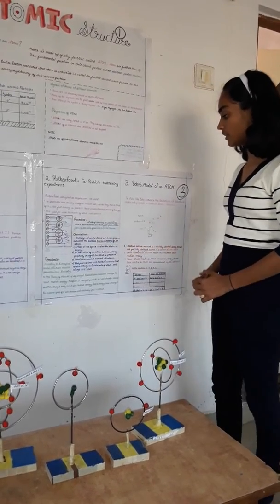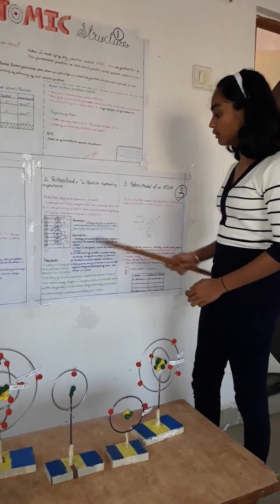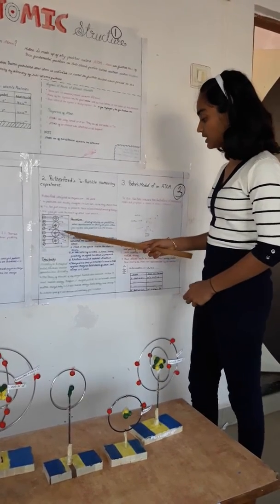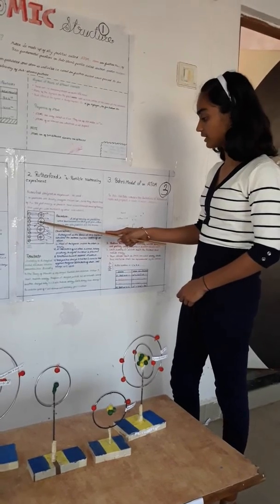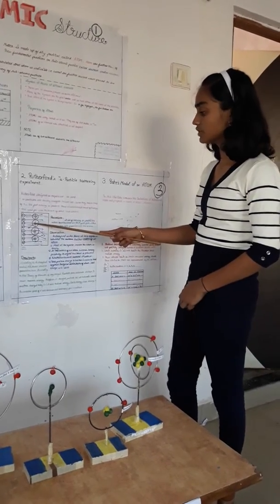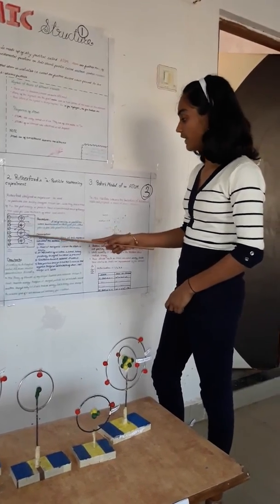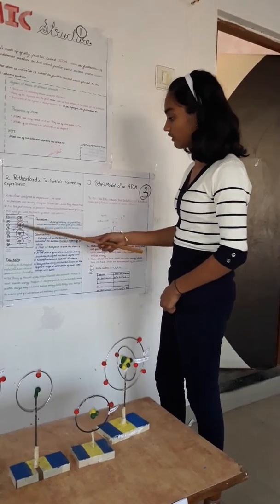Rutherford observed that most of the space in atom is empty. At the center of the atom there is a nucleus which is a positively charged body and electrons are revolving around it.